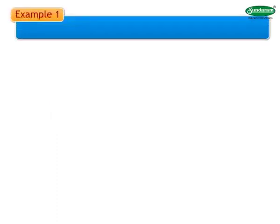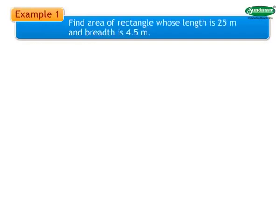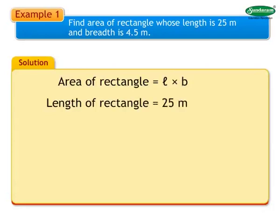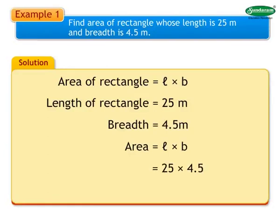Example 1: Find the area of a rectangle whose length is 25 meters and breadth is 4.5 meters. Solution: Area of rectangle equals length into breadth. Length is 25 meters, breadth is 4.5 meters. Area equals 25 into 4.5, equals 112.5 square meters.